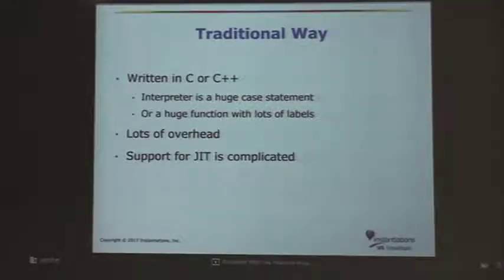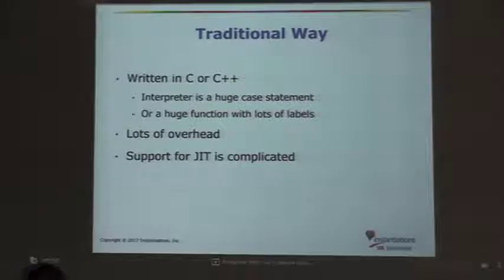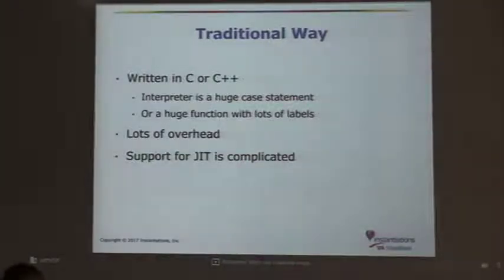And if your compiler supports computed gotos, it is just a bunch of labels. Well, that works, but still, in spite of modern compilers providing very sophisticated optimizations, there is still a lot of overhead — extra memory operations. You can go to one scope using a function call and return, analyze the result, depending on that go to another place, and so on. It worked.